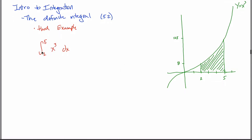So instead of x squared, let's do x cubed. Instead of going from zero to one, let's go from two to five as somewhat arbitrary endpoints. I'm just going to write this mess of symbols and you are to understand what this is asking. While you don't need a picture, here's a picture just to help you reference. We want to go from two to five on the x axis and find the area underneath the curve y equals x cubed. Those x values correspond with y values of eight and 125 because two cubed is eight and five cubed is 125, although that's just context.